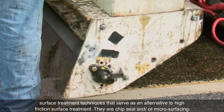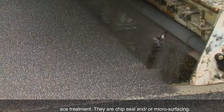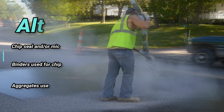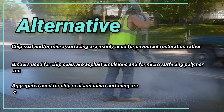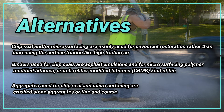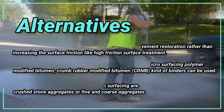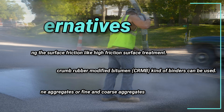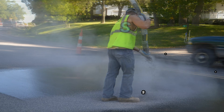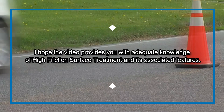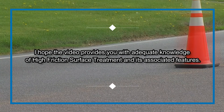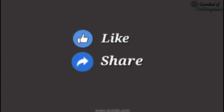Surface treatment techniques that serve as alternatives to high friction surface treatment are chip seal and micro surfacing. These are mainly used for pavement restoration rather than increasing surface friction. Binders used for chip seals are asphalt emulsions, while for micro surfacing, polymer modified bitumen or crumb rubber modified bitumen (CRMB) can be used. Aggregates used for chip seal and micro surfacing are crushed stone or fine and coarse aggregates.